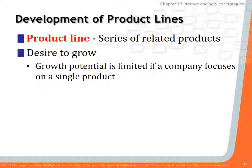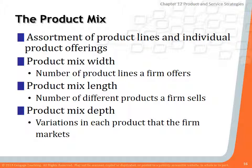Now let's talk about product lines and product mixes. A product line is a series of related products. For example, P&G has a wide range of product lines: detergents like Tide, Gain, and Cheer; dishwashing detergents like Dawn and Cascade; and paper products like Pampers, Bounty, and Charmin. Product mix width refers to the number of product lines a firm offers — from detergent to dishwashing detergent to paper products to personal care to home care. All those categories together represent P&G's product mix width.